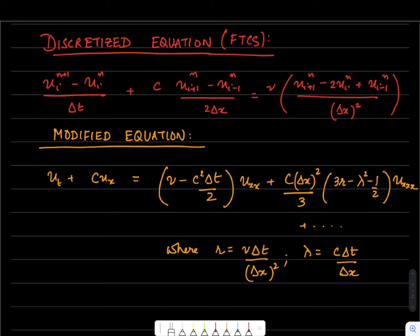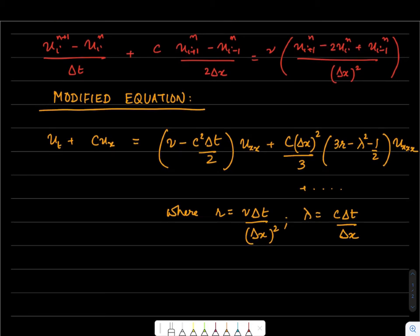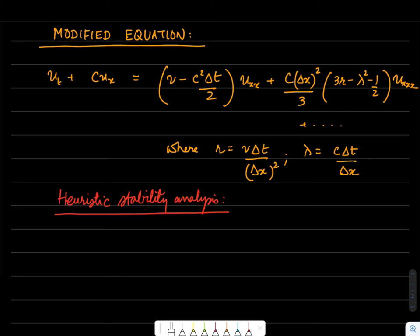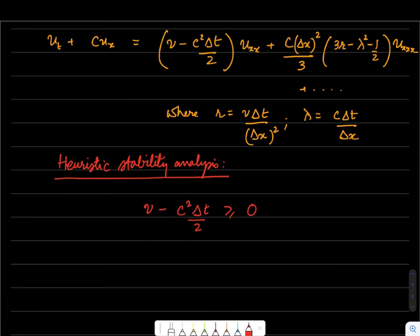We also looked at the graphical representation of stability curves. Now, starting with a very heuristic stability analysis based on simple arguments: since we are modeling a diffusion-based equation with a convective part, the modified viscosity should always be greater than zero. This means ν - c²Δt/2 should be greater than or equal to zero, based on physical arguments.